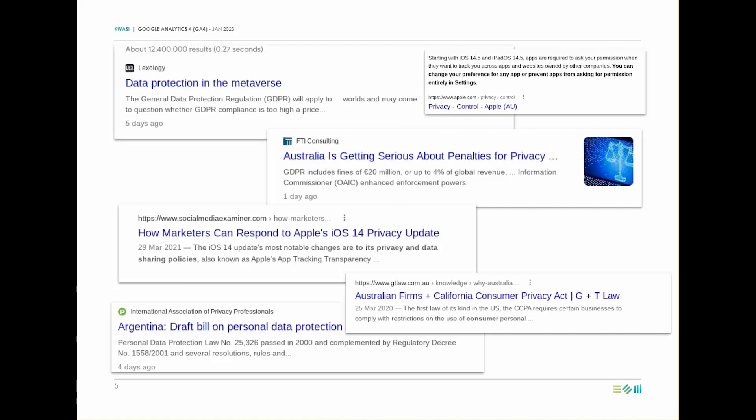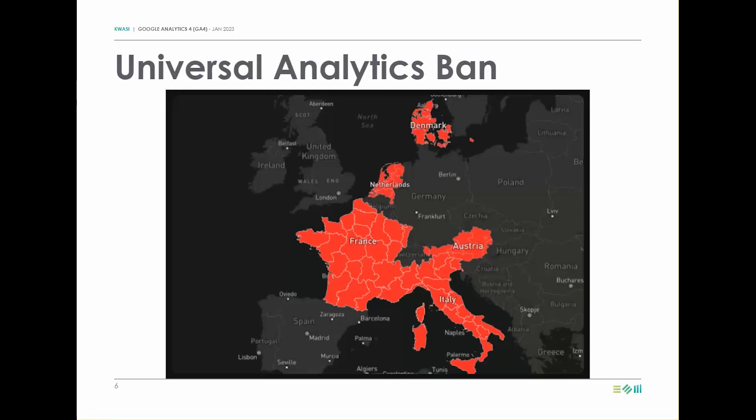For a long time, consumer privacy has been a hot topic, with governments all over the world passing their own bills in response to citizens' rights on data and security protection. With privacy in mind and certain global regulatory changes including GDPR, some European countries have already started to ban Universal Analytics. It's of essence to use a platform that addresses these concerns, and Google Analytics 4 has introduced many controls to enable what data is being collected.